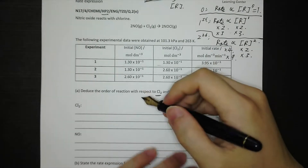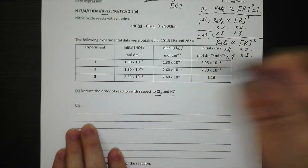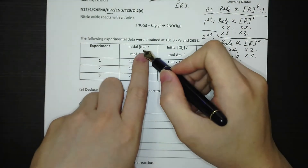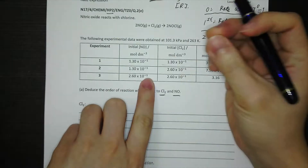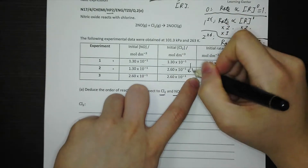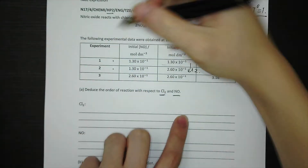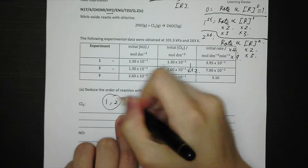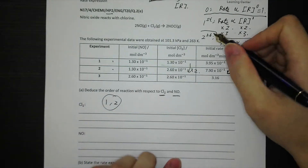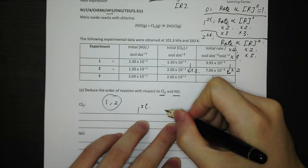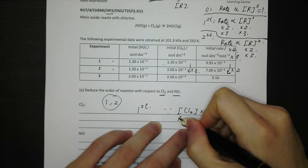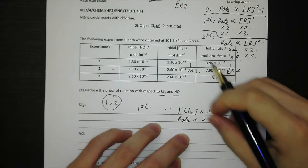Now let's go back to part A — find the order with respect to chlorine gas. We choose experiments 1 and 2, where the concentration of NO is unchanged. The chlorine concentration is doubled from experiment 1 to 2, and the rate is also doubled. When both are doubled, that means it's first order for chlorine.